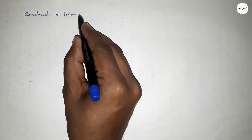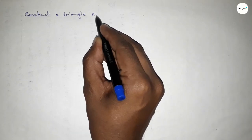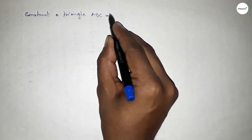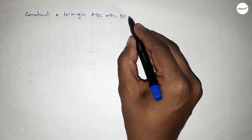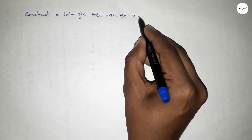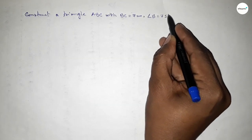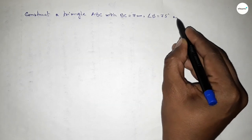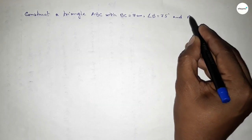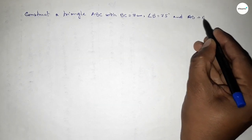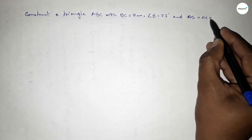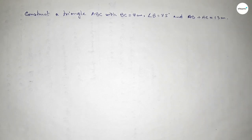Hi everyone, welcome to SI Share Classes. Today in this video we have to draw a triangle ABC with BC equal to 7 centimeters, angle B equal to 75 degrees, and AB plus AC equal to 13 centimeters. So let's start the video.